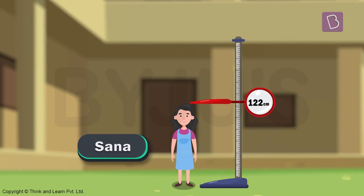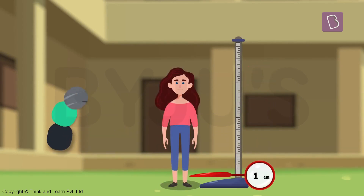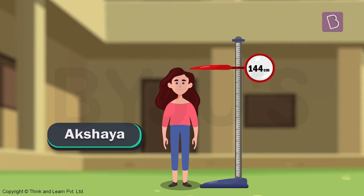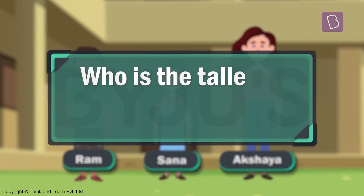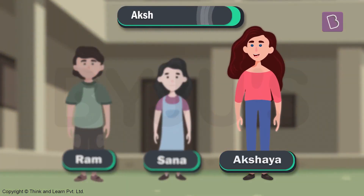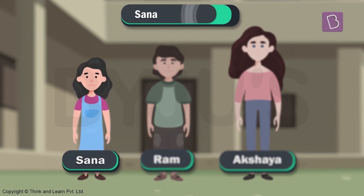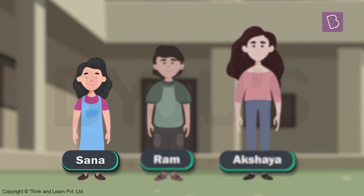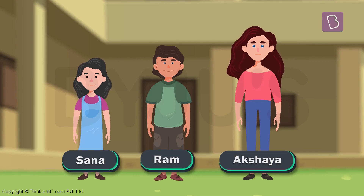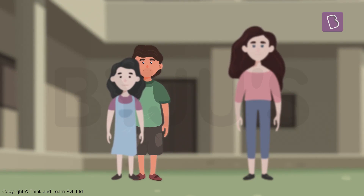For example, Sana's height is 122 centimeters, Ram's height is 132 centimeters, and Akshaya's height is 144 centimeters. Out of all these three, Akshaya is the tallest, Ram is taller than Sana, and Sana is the shortest. Therefore, while lining up for the morning assembly, Sana will stand in the front, followed by Ram, and at the end will be standing Akshaya.